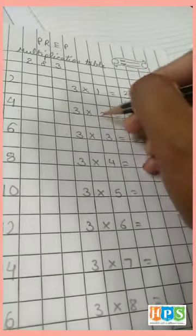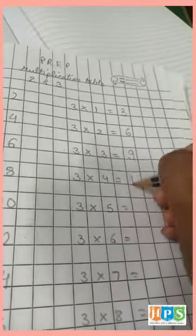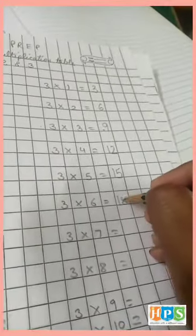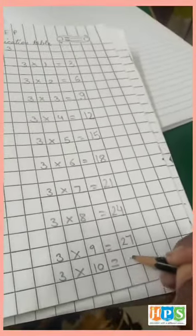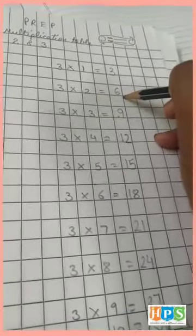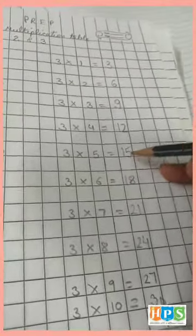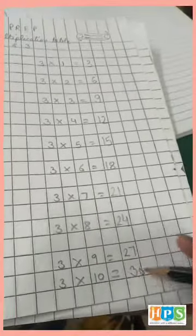3×1 is 3. 3×2 is 6. 3×3 is 9. 3×4 is 12. 3×5 is 15. 3×6 is 18. 3×7 is 21. 3×8 is 24. 3×9 is 27. 3×10 is 30. 3×1 is 3. 3×2 is 6. 3×3 is 9. 3×4 is 12. 3×5 is 15. 3×6 is 18. 3×7 is 21. 3×8 is 24. 3×9 is 27. 3×10 is 30.